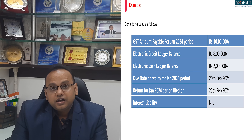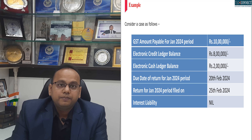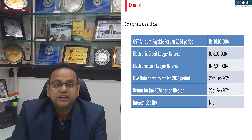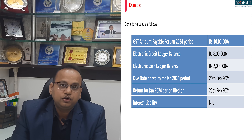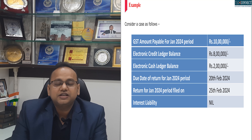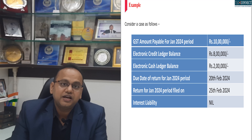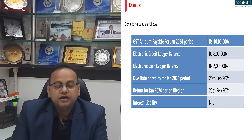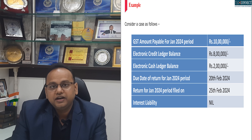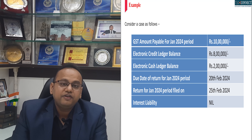The GST payable amount is 10 lakh rupees. Your GST electronic credit balance is 8 lakh rupees and the balance in the electronic cash ledger is 2 lakh rupees.